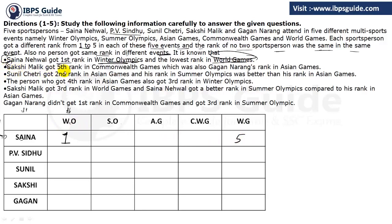Second: Sakshi Malik got fifth rank in Commonwealth Games, so we place 5 there. This was also Gagan Narang's rank in Asian Games, so Gagan Narang gets rank 5 in Asian Games. Now 5 appears in those three columns, leaving only Winter Olympics and Summer Olympics for rank 5 among the remaining players — meaning it can only be with PV Sindhu or Sunil.